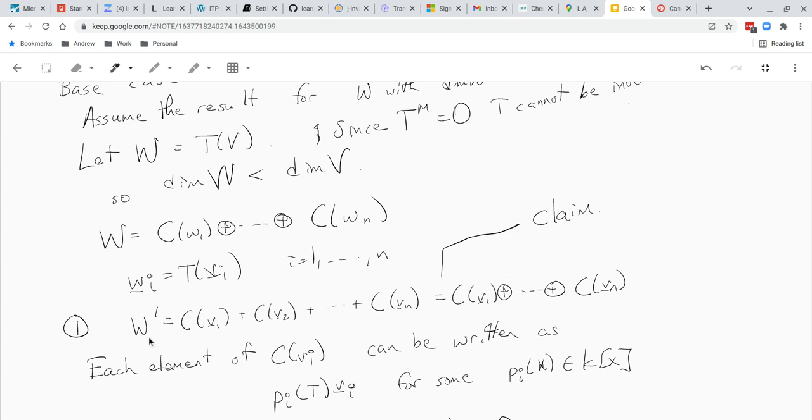We define W prime to be this and we want these direct sum things. I didn't mention but you can just check that since Wi is a cyclic vector and T of Vi equals Wi, Vi is also a cyclic vector.